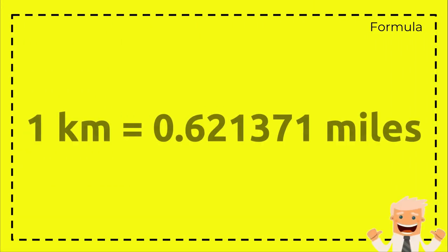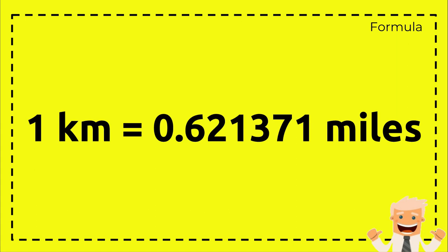Alright, this is the formula that we need to know before we answer the question. So, 1 km equals 0.621371 miles.